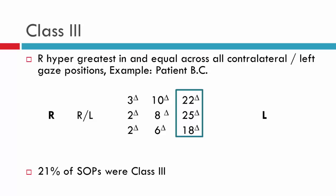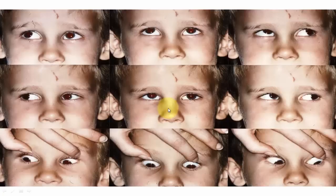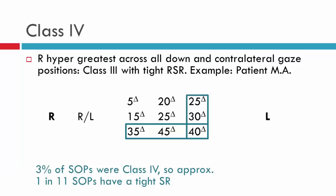Class three. The right hyperdeviation is greatest along the entire contralateral left gaze position. There's little difference between levo elevation, levo version, and levo depression — values of 22, 25, and 18. The deviation is clearly much larger in left gaze than in right gaze or primary, with similar inferior oblique overaction and superior oblique underaction. This young boy has a class three superior oblique palsy. In primary position we see the right hyperdeviation; in left gaze, levo elevation, and levo depression, the hyperdeviation is similar across all three positions — which is why it's classified as class three.